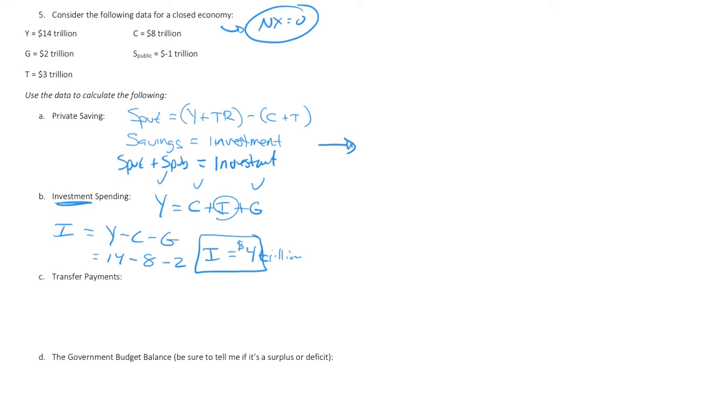So public savings and private savings must equal investment. We know that private savings is what I'm looking for. Public savings is negative $1 trillion. And we know investment from before was equal to $4 trillion. So if I solve this out, if I add $1 trillion to both sides, I get private savings equaling to $5 trillion. So there we go. We have solved for it now.